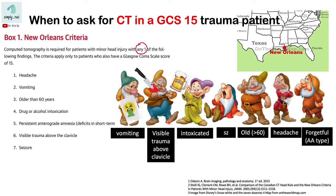think about these seven dwarves. One is vomiting. One has visible trauma above the clavicle. One is intoxicated. Another has seizures. Another is old, more than 60. Another has headache. And one is forgetful,